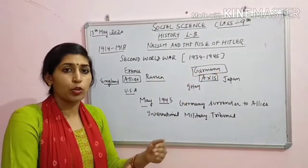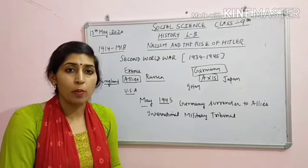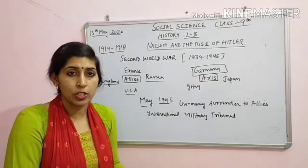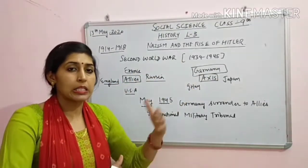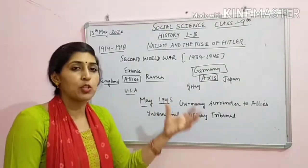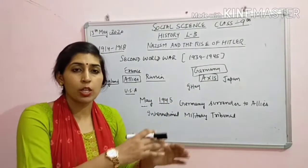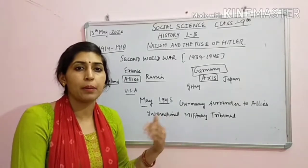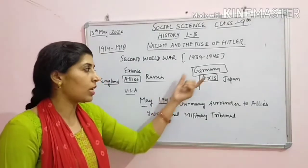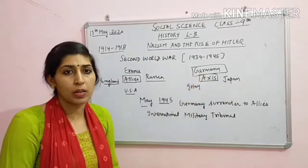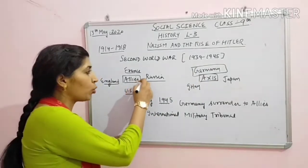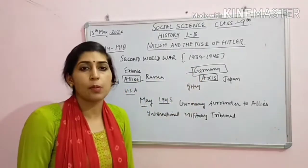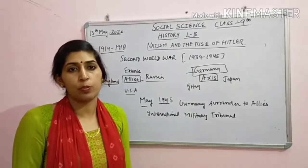Ab jo Nazi the, unhone kyunki nirdosh logon ko maara hai, toh allied group ne kaha ki Second World War bhi aap logon ki wajah se hua hai. Itne saare log maare gaye hain, upar se aapne Germany mein aur aas paas ke jitne bhi territories ko occupy kara, aur apne logon ko marwaya hai. So uske liye aapko punishment to milegi. Toh ab punishment allies group dhega kisko? Jo Nazis the unko, jo Hitler ke supporter the unko punishment milegi.